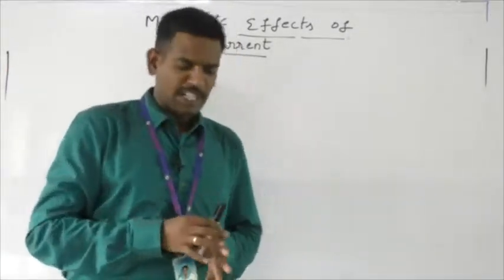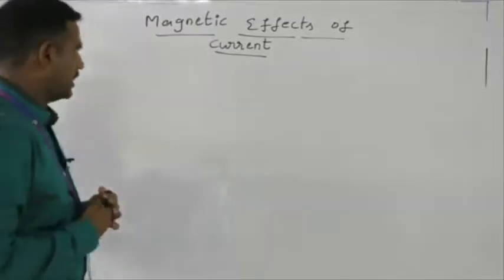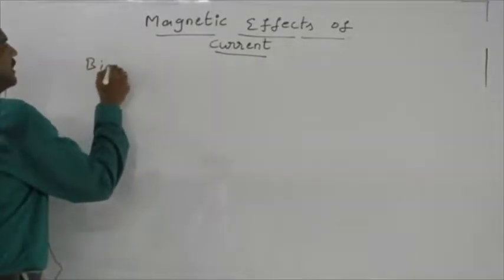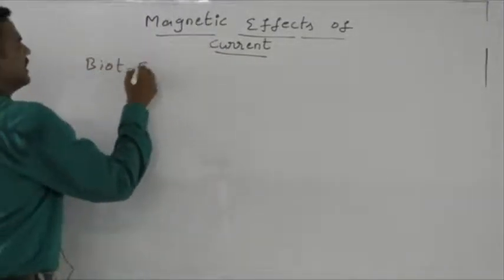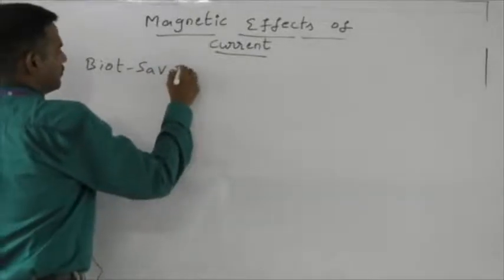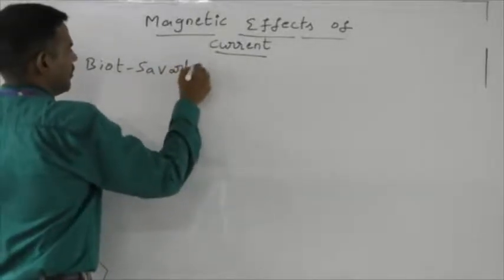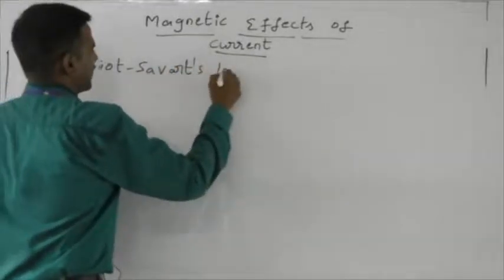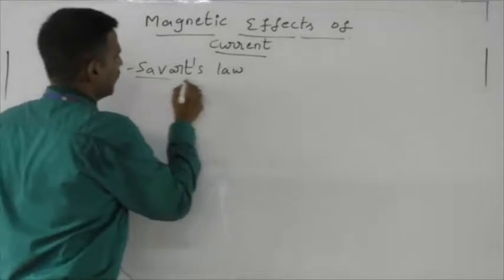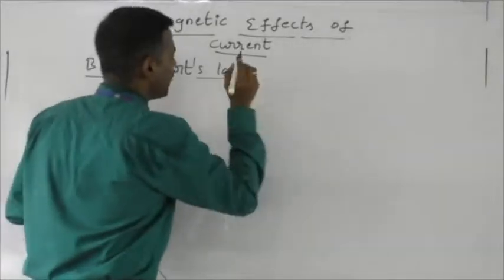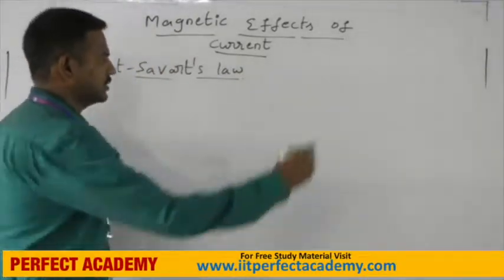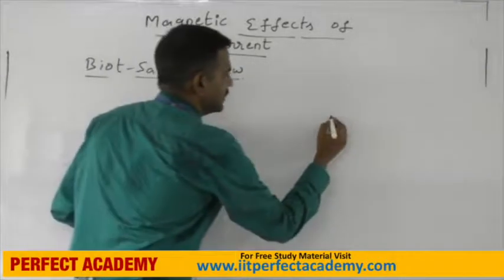Now let me start with the Biot-Savart Law. Biot-Savart originally gave this formula for finding the magnetic field intensity due to a moving charge.